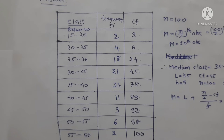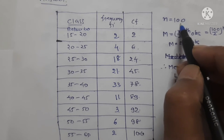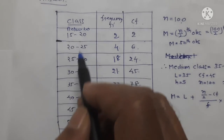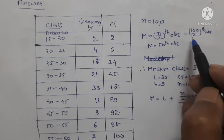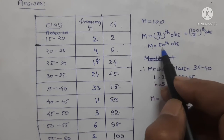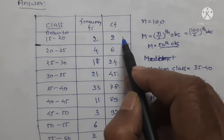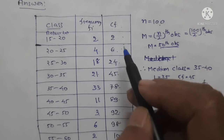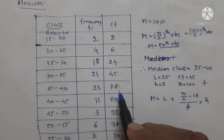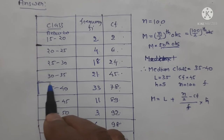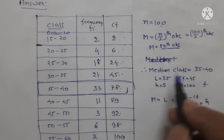Given n equals 100. The median formula for grouped data: m equals n upon 2, which is 100 upon 2 equals the 50th observation. Checking cumulative frequencies: 2, 6, 24, 45 — the 50th observation falls in the class where cumulative frequency first exceeds 50, which is 78. Therefore the median class is 35 to 40.